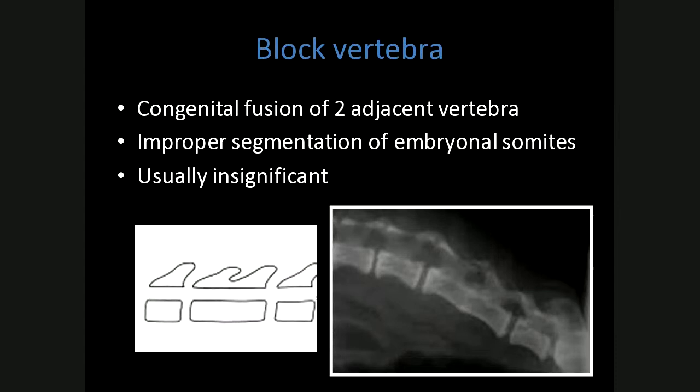Block vertebra is the congenital fusion of two adjacent vertebrae. It may be complete or partial and is due to improper segmentation of embryonal somites. It can cause increased stress on adjacent vertebrae, although it's usually insignificant. In this example, L5 and L6 are block vertebrae fused along their bodies.